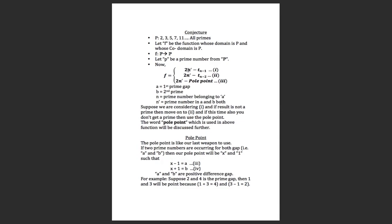Let a equal the first prime gap, b equal the second prime gap, n equal the prime number belonging to a, and n' be the prime number belonging to both a and b. Considering equation 1 — that is, 2n' minus 3n minus 1 — if the result is not equal to a prime, jump to equation 2.